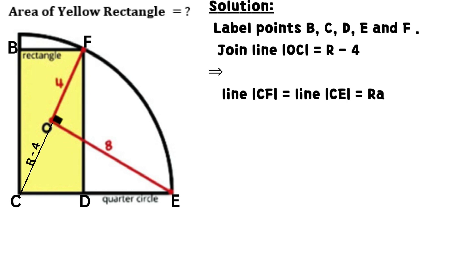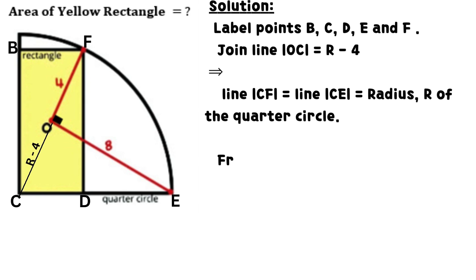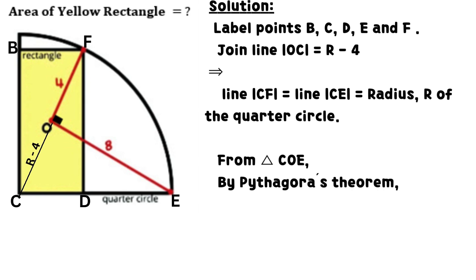Join line OC equals R minus 4. It means that line CF equals line CE, which equals the radius R of the quarter circle. From triangle COE.